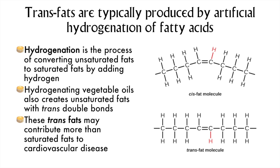Unfortunately, there is a third effect of partial hydrogenation. Trans fats, as you can see in the illustration, lie flatter in three dimensions compared to cis-isomers, which have a kink in that hydrocarbon tail. That lying flatter contributes more risk to developing cardiovascular disease than natural saturated fats. This is why we see zero grams trans fat on food packaging nowadays — because of its increased risk of contributing to heart disease.